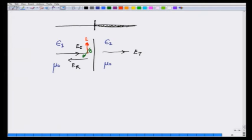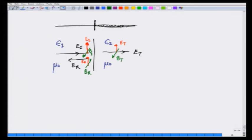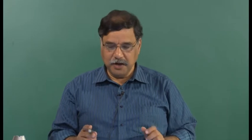On the other hand, when it gets reflected, suppose I take E to be in the same direction as the incoming wave. Then E cross B should give me the direction of propagation, and therefore the reflected B field is going to be the other way. So this is B reflected, the first one is B incident, this is E incident and E reflected. At the same time in the transmitted wave there is going to be E transmitted going in the same direction as the incident wave, and B transmitted is in the same direction as B incident.